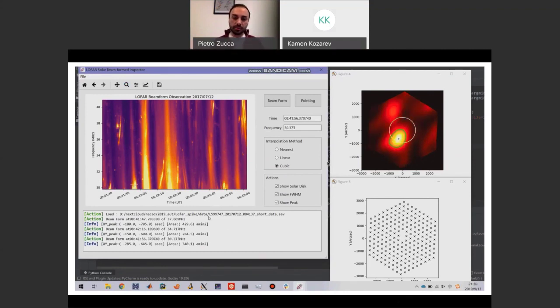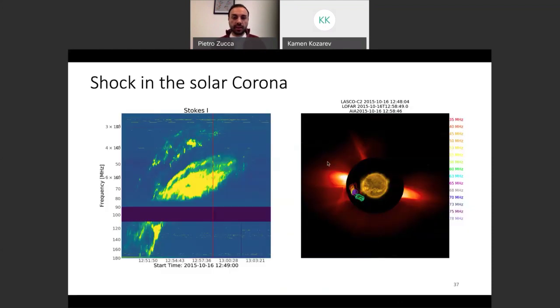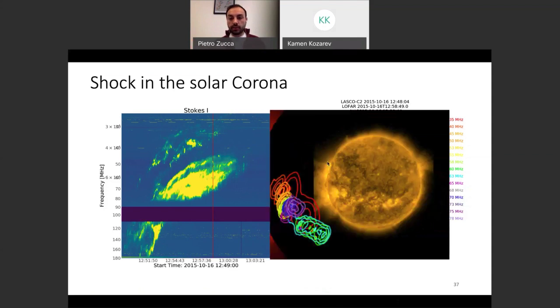The final thing is about shocks. This is a recent observation about type 2, so it's a shock in the solar corona. You can see that LOFAR could image this shock at different frequencies, and these frequencies were disposed along the shock front as the CME was propagating.